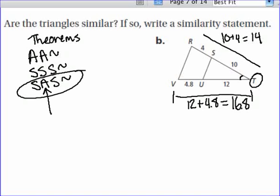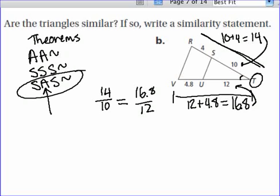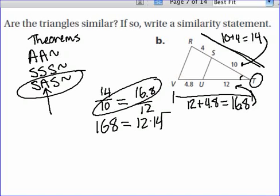So, now, is this whole length of 14, does it have the same scale factor that 16.8 has to 12? So we're going to try setting up a proportion where it's 14 over 10 should equal 16.8 over 12. Okay, let's just see if that is true. Well, 10 times 16.8 is 168, and 12 times 14 is also 168. So, I know this is true.